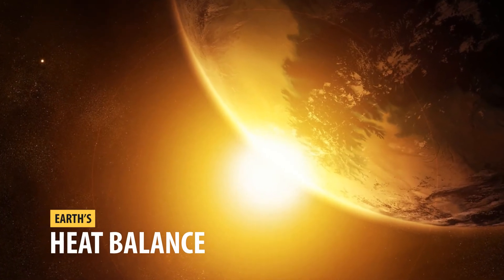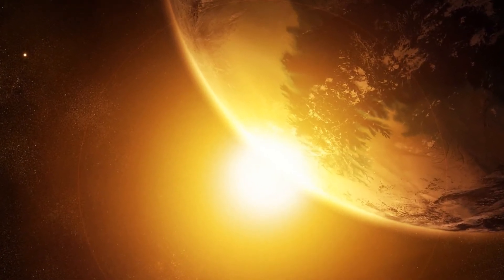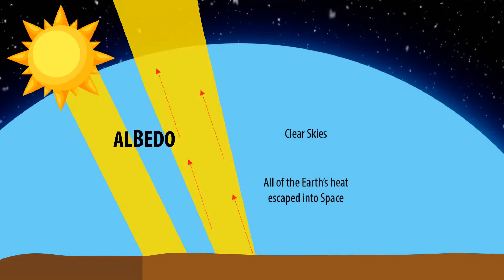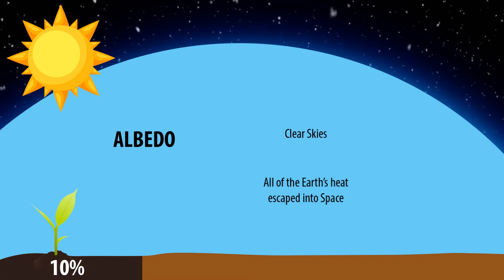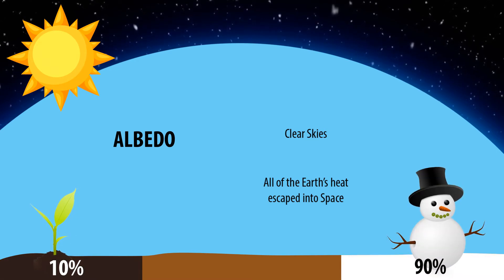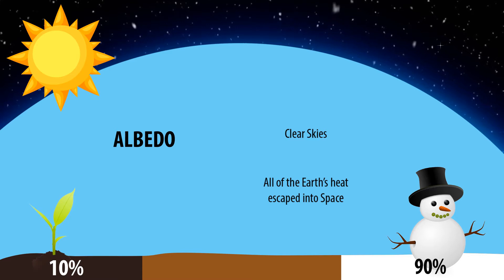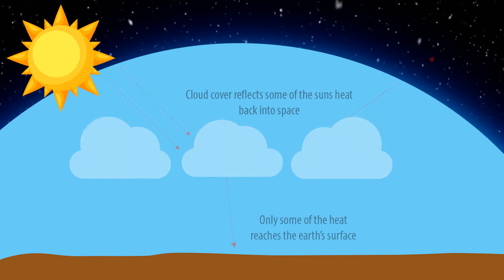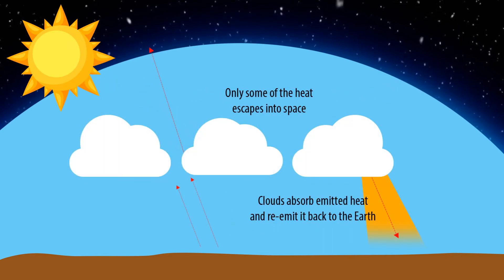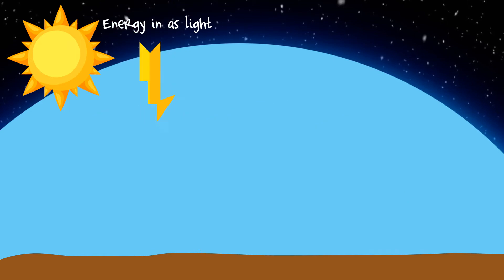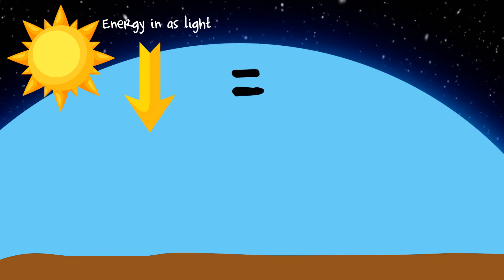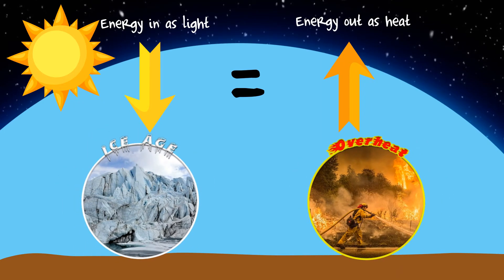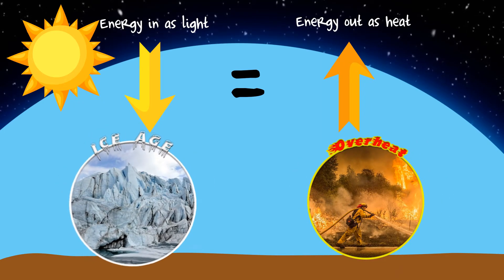The Earth's heat balance is the way our planet regulates heat. Sunlight reflected off the Earth is called albedo. Black soil has about 10% albedo and new snow may have 90% albedo. Cloud tops reflect light back to space, while cloud bottoms reflect heat back to the surface. Energy that enters the atmosphere as light needs to be about equal to the energy that leaves the atmosphere as heat, otherwise the Earth will go into an ice age or heat too much.